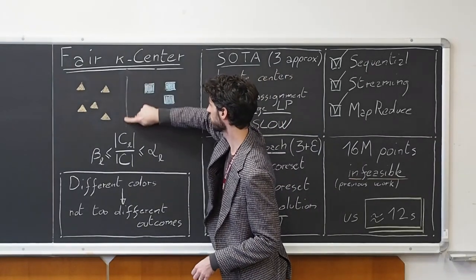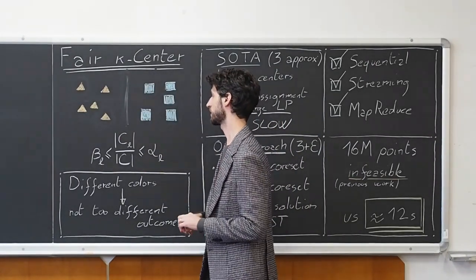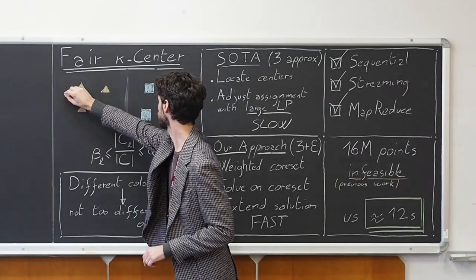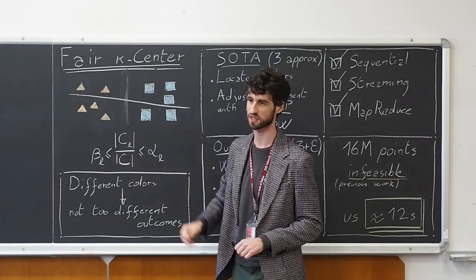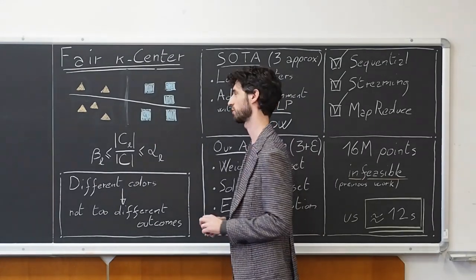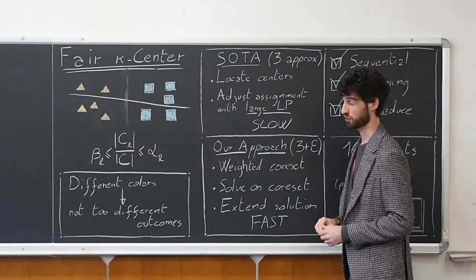Therefore, in our example here, a better partitioning that ensures fairness would be this one, where approximately half of the points are from each of the two colors or shapes.